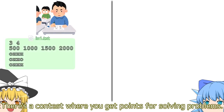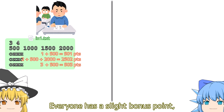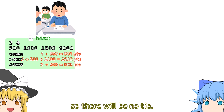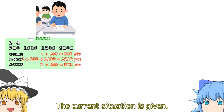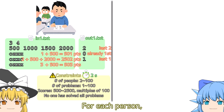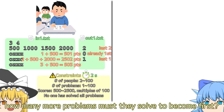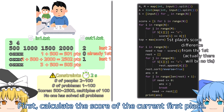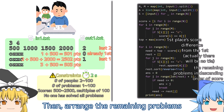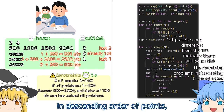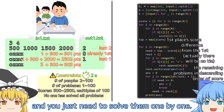Problem C. There's a contest where you get points for solving problems. Everyone has a slight bonus point, so there will be no tie. The current situation is given. For each person, how many more problems must they solve to become first? First, calculate the score of the current first place. Then arrange the remaining problems in descending order of points, and solve them one by one.